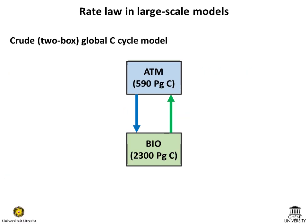In these types of models, the sizes of the compartments and of the fluxes between the compartments can sometimes be well constrained. For example, in our crude carbon cycle model, the amount of carbon in Earth's atmosphere is about 590 petagrams, whereas the size of the biosphere is about 2,300 petagrams of carbon. Furthermore, the annual exchange of carbon between the atmosphere and the biosphere is about 60 petagrams carbon per year. These values can now be used to calculate the rate constant for the carbon fluxes between the atmosphere and the biosphere.